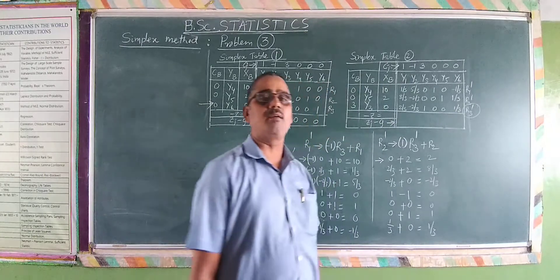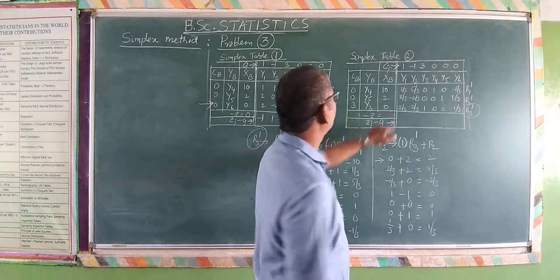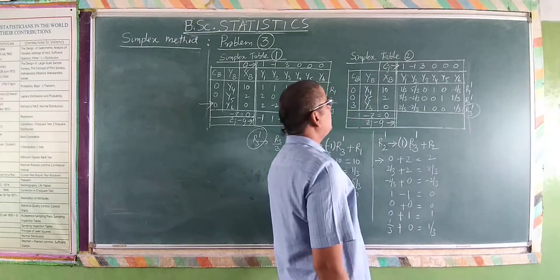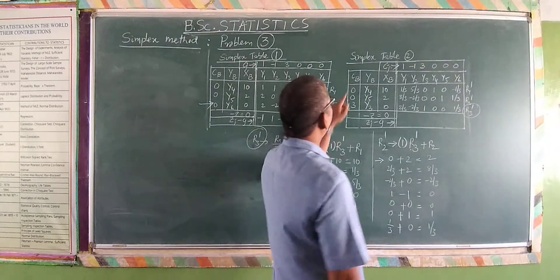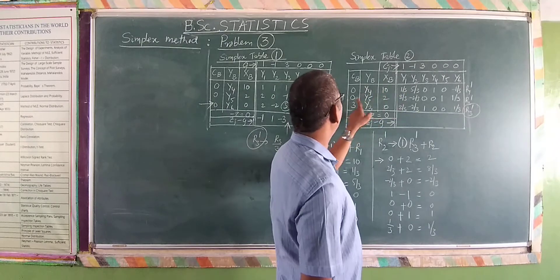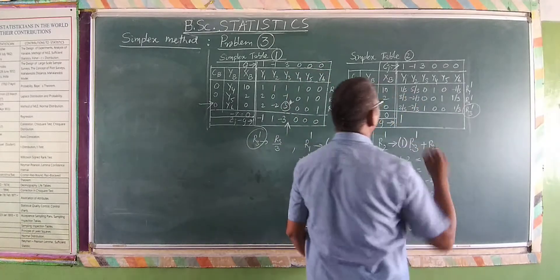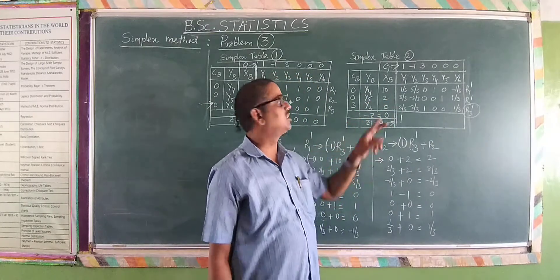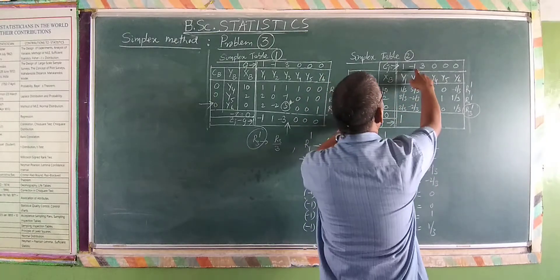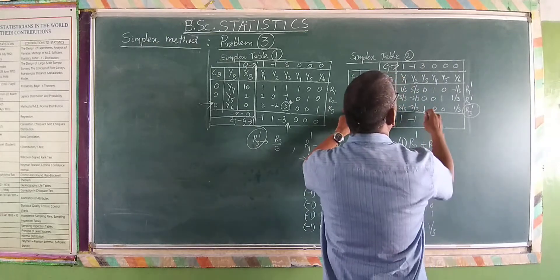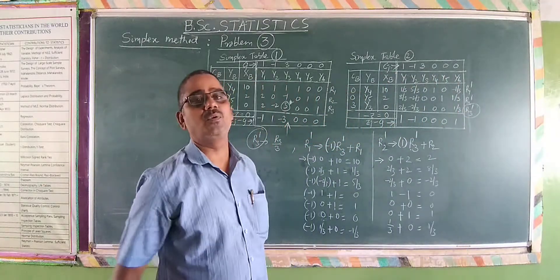Now calculating minus Z again: Cp × xb gives 0×10 + 0×2 + 3×0 = 0. For the Zj minus Cj row, with Cp = (0, 0, 3): for y1: 0×0 + 0×(1/3) + 3×(2/3) = 2, minus C1=1, gives 1. For y2: 3×(2/3) = 2, minus 1 = 1. For y6: 3×(minus 2/3) = minus 2, minus(minus 1) = minus 1. And 3×(1/3) = 1. So we still have one negative value: minus 1.